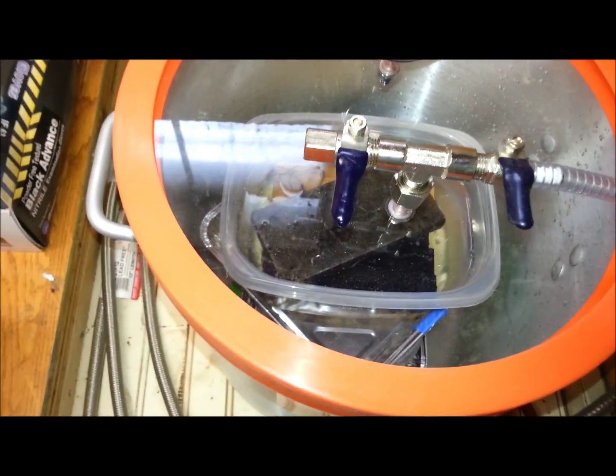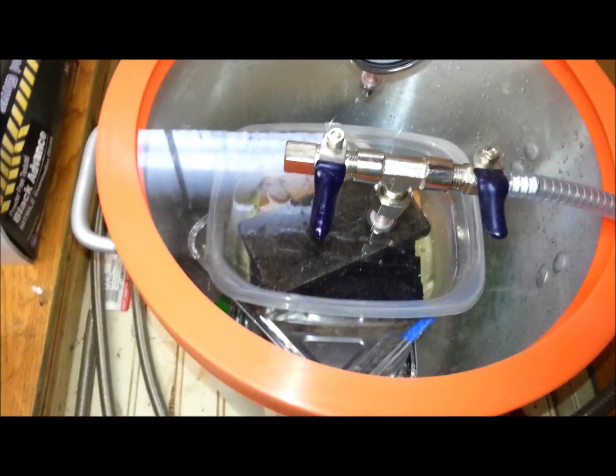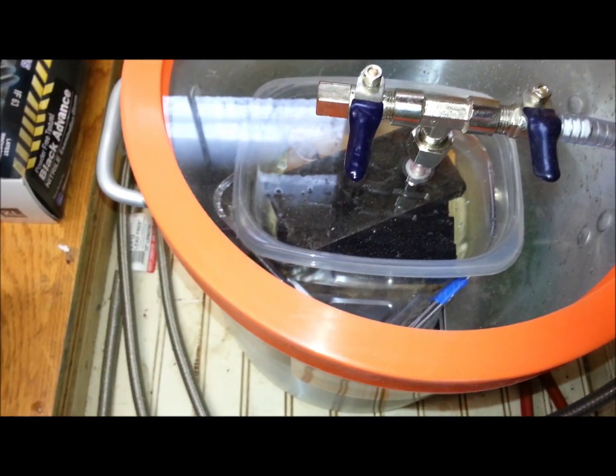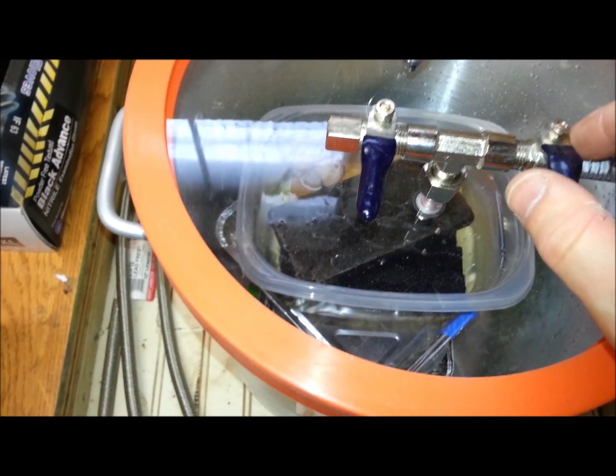Okay, so what I got in here is one really big block of spalted maple, another little block of spalted wood, a couple other little pen blanks, and then some bog oak pen blanks. We're going to see how this works.